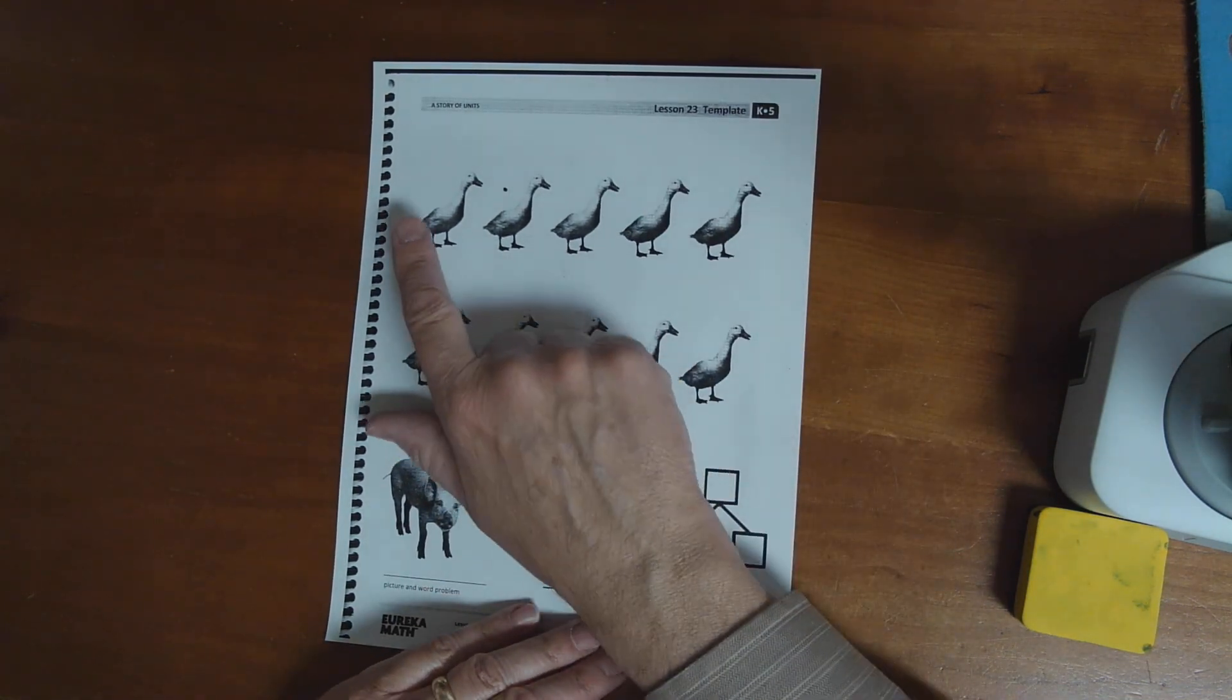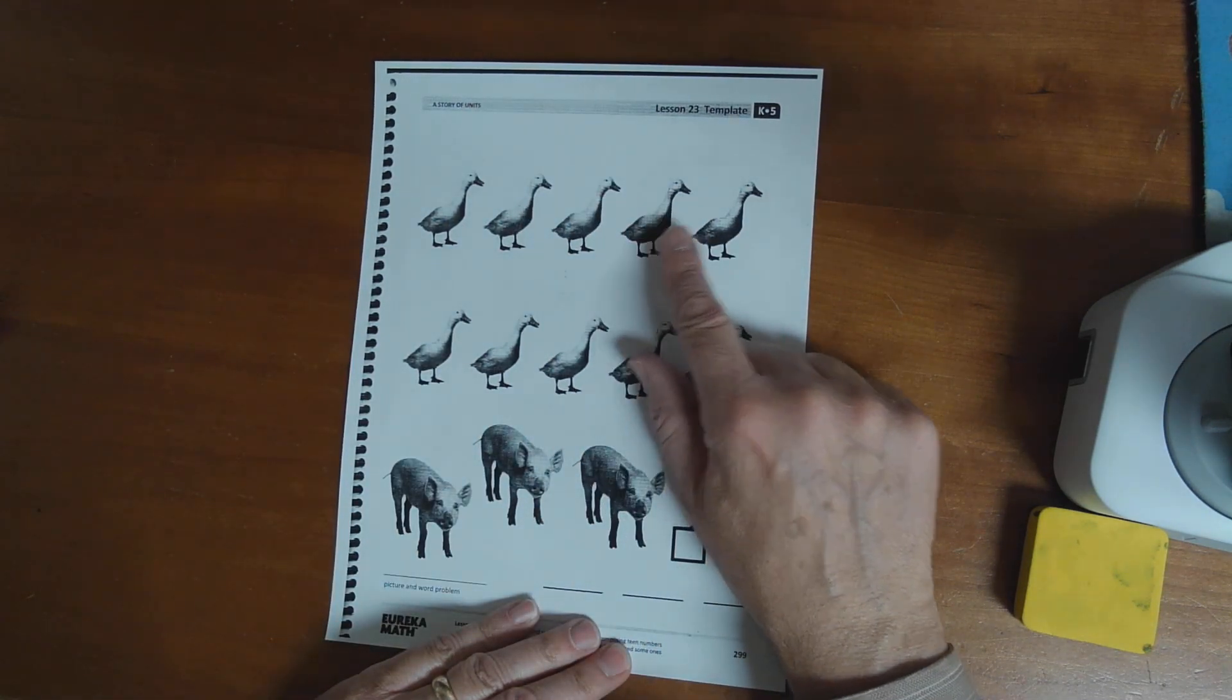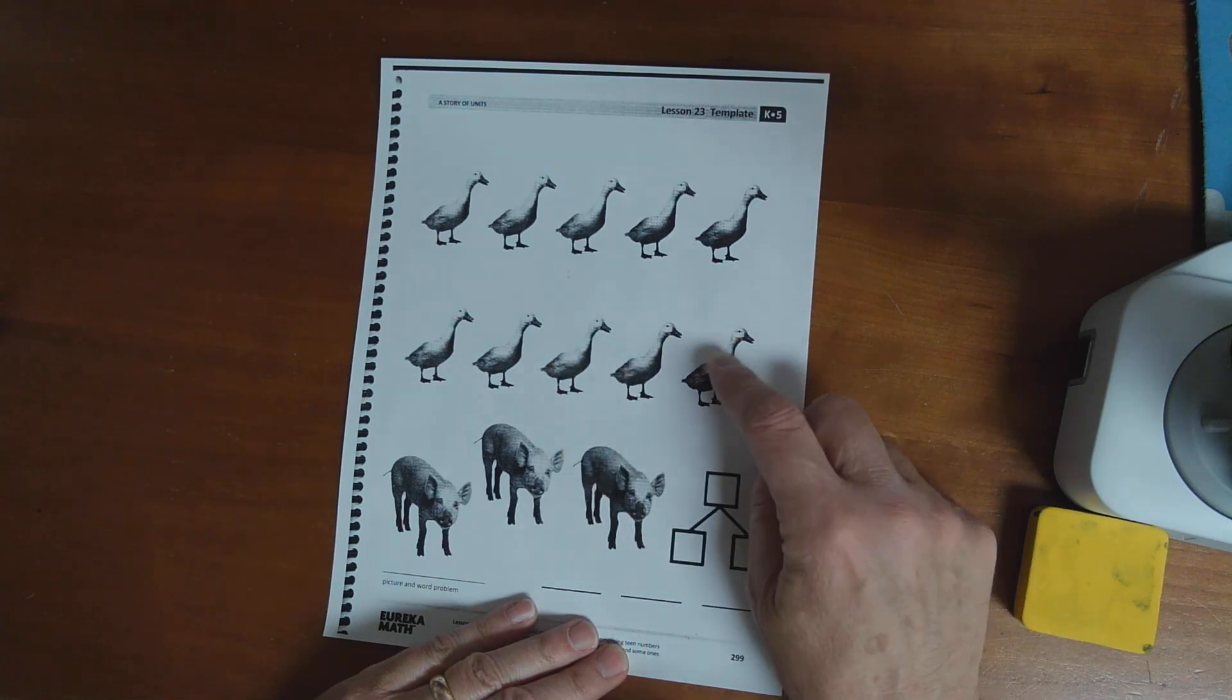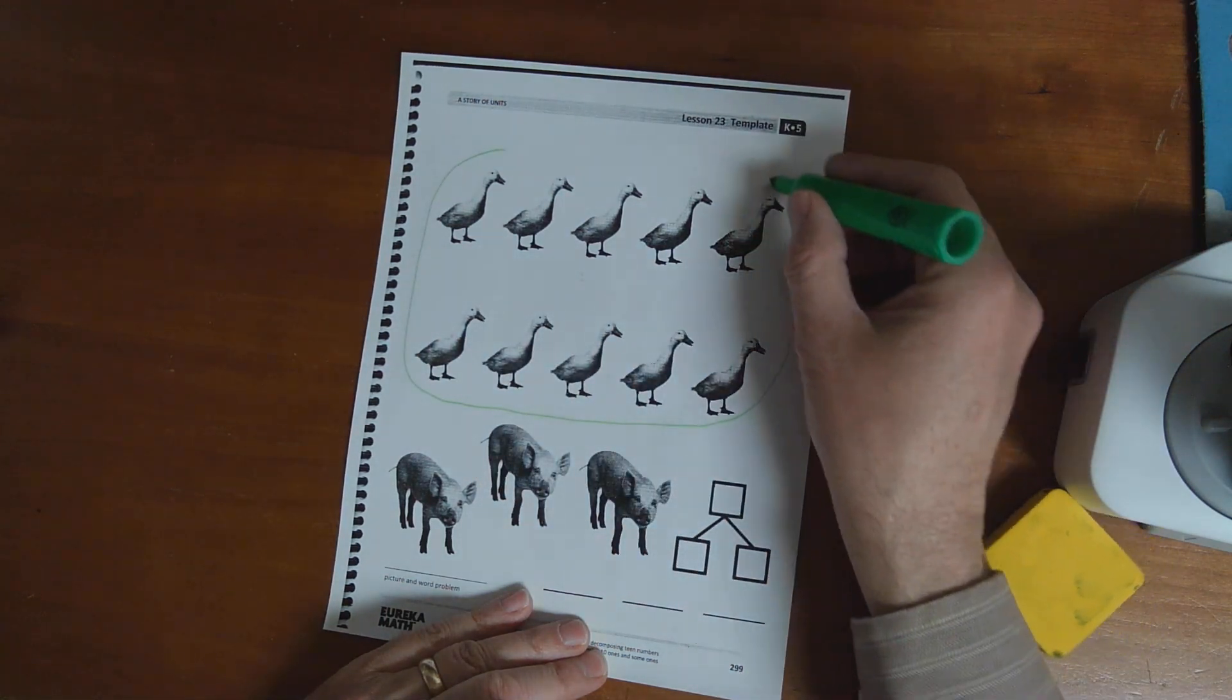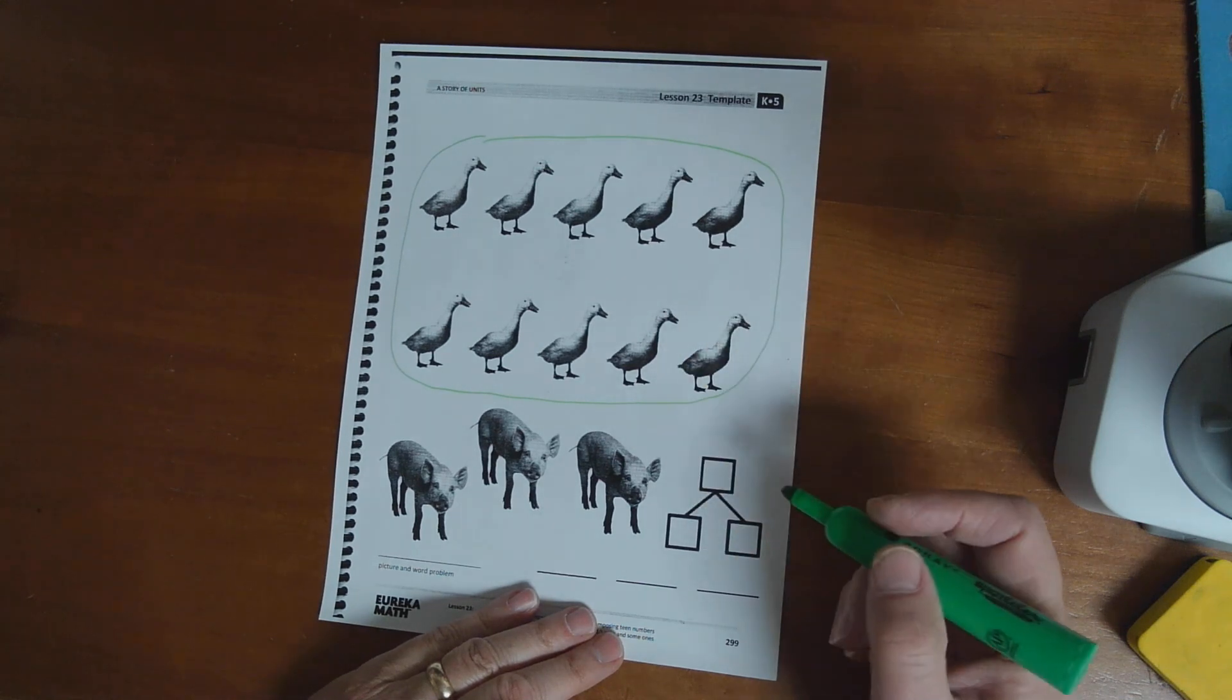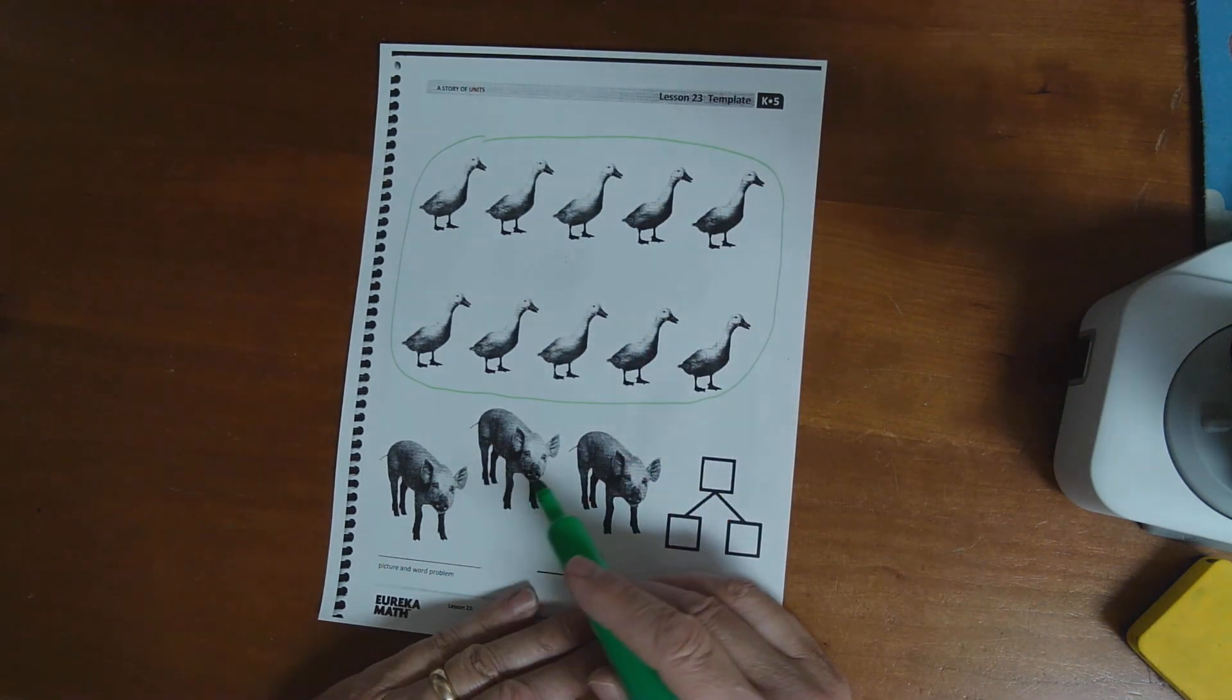And I'm going to... Let's count how many ducks there are. 1, 2, 3, 4, 5, 6, 7, 8, 9, 10. Okay. Now, what I'm going to do is I'm going to circle like that the ducks that are in the group. Okay. It's a group of 10. And how many more? 3.